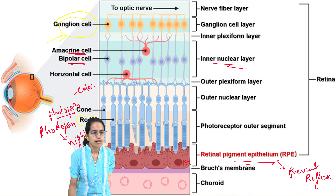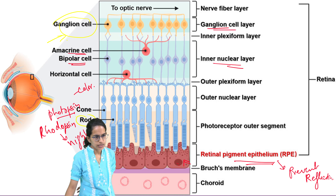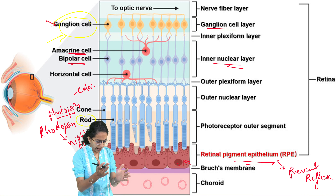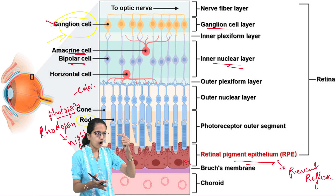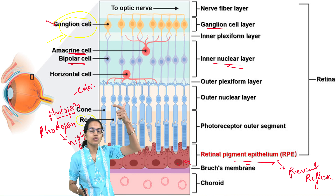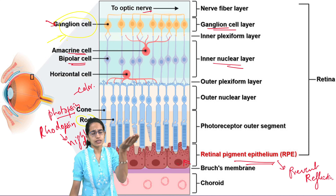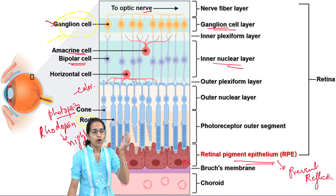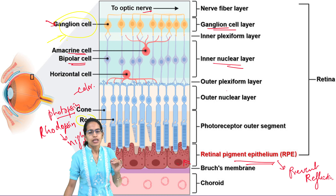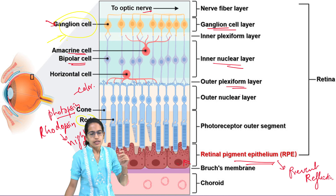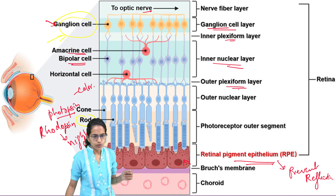Now coming on to the internal structure of the retina. Within the retina there are various layers. Rods have rhodopsin and cones have photopsin. Photopsin basically helps you in color vision. Rhodopsin helps you in night vision or dark vision. Here is the pigment epithelium. Now retinal pigment epithelium is made up of melanin. It absorbs the light which falls onto it and it also prevents any kind of reflection that happens.